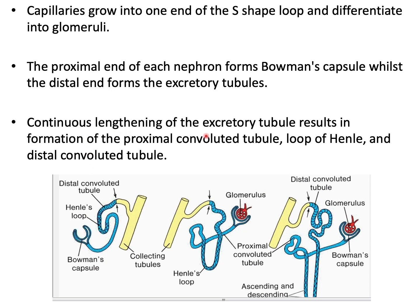Capillaries are going to grow into the S-shaped loop and differentiate into glomeruli. The proximal end of each nephron will form the Bowman's capsule, while the distal end will form the excretory tubule. Continued elongation of the excretory tubule results in the formation of the proximal convoluted tubule, the loop of Henle descending downwards, and then the distal convoluted tubule, which will join the collecting tubule.